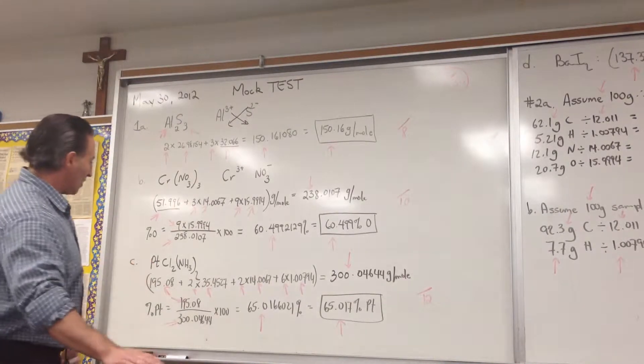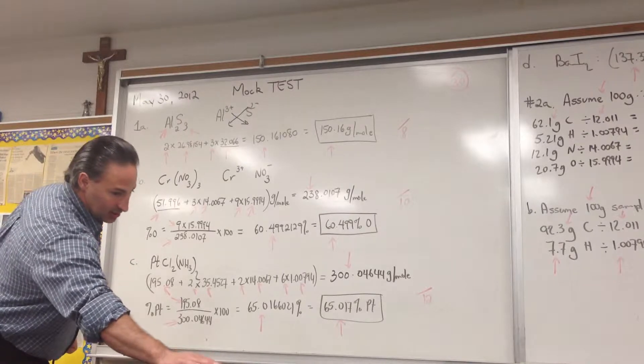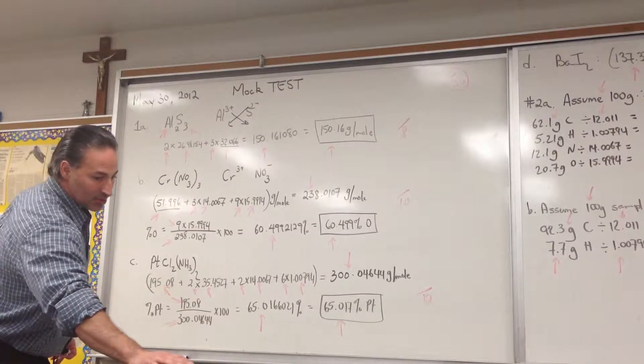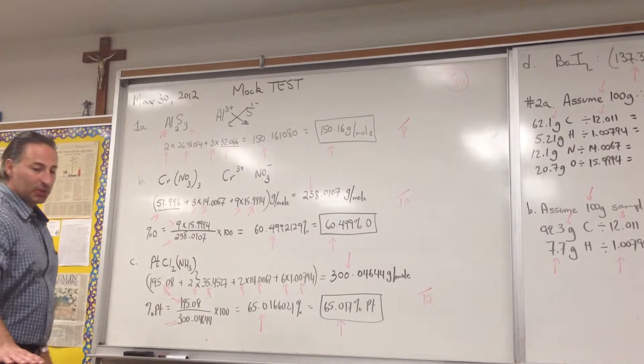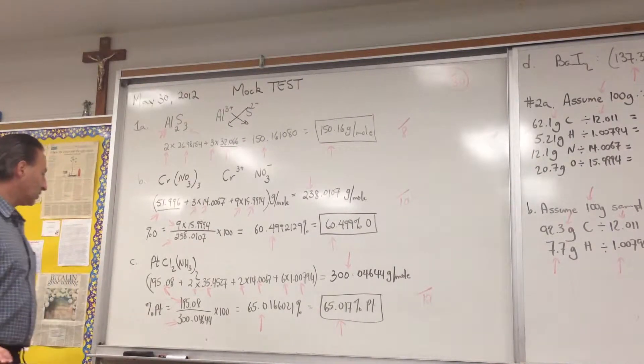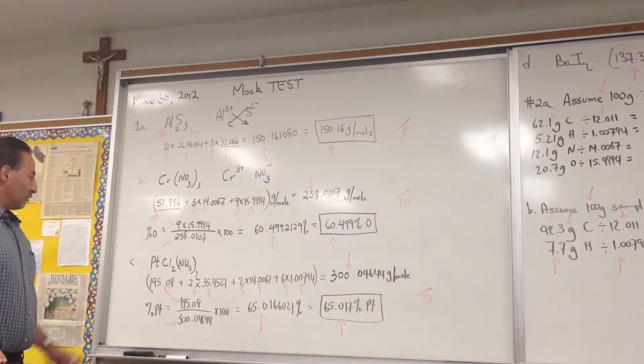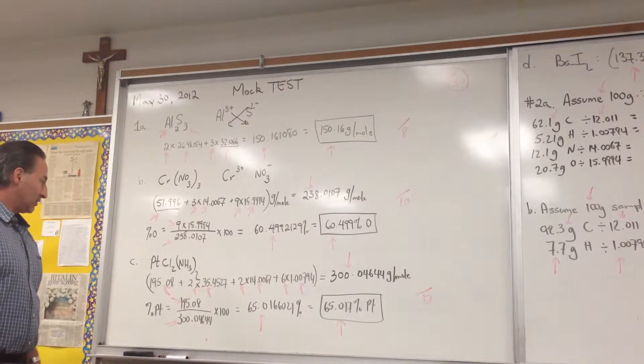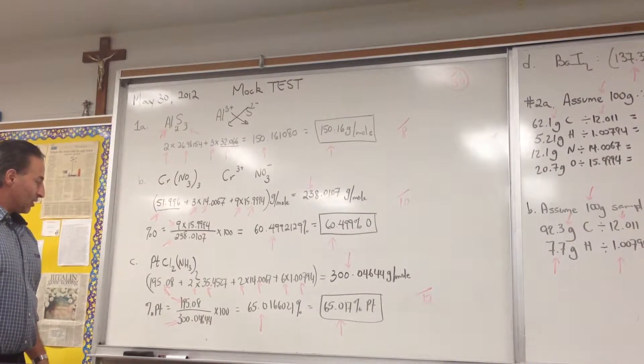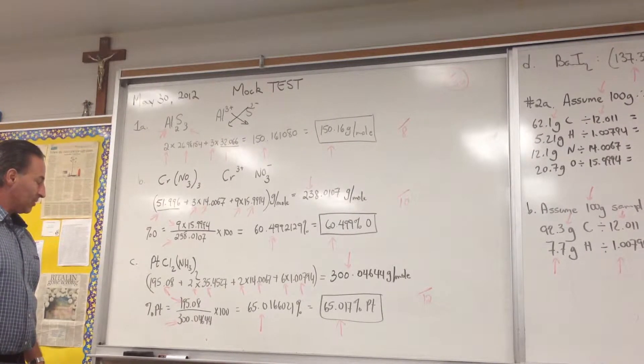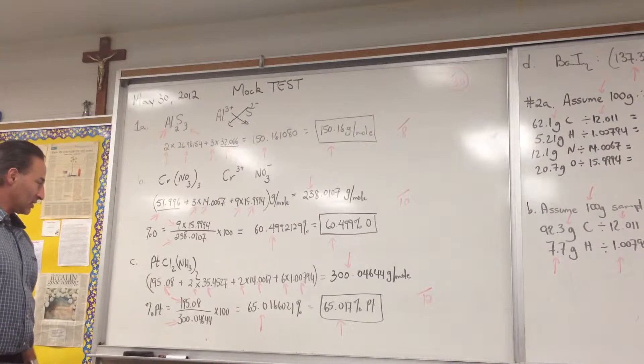In this question we're asked to find out the percent composition, the percent platinum in a drug called cisplatin, which is used to treat cancer. It binds to the DNA, and I guess it causes the polymerase enzyme to strip or skip or damage their translation, so it ends up killing the cell.